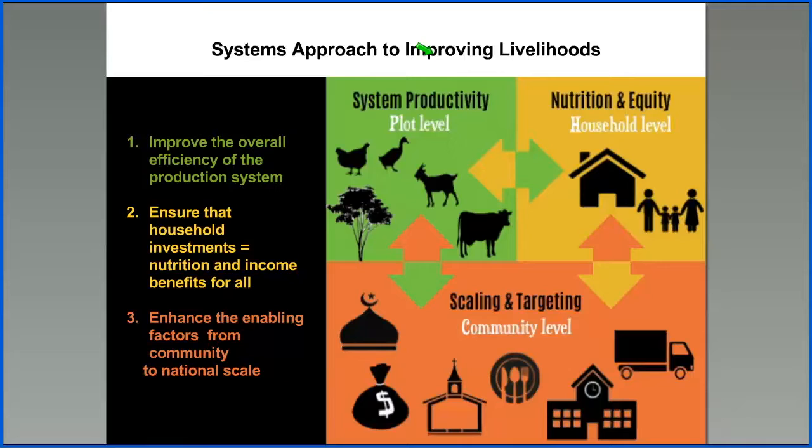The systems approach to improving livelihoods requires an integration of system productivity, nutrition and equity, and the scaling and targeting. At the plot level, we are looking at improving the overall efficiency of the production system, which requires integration of trees, livestock, crops, and so forth.